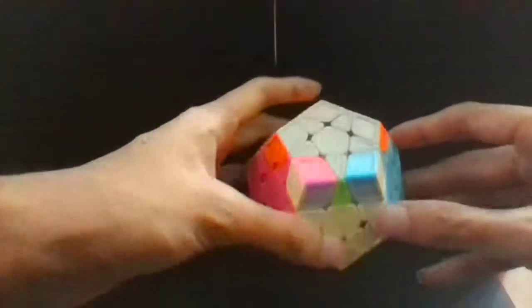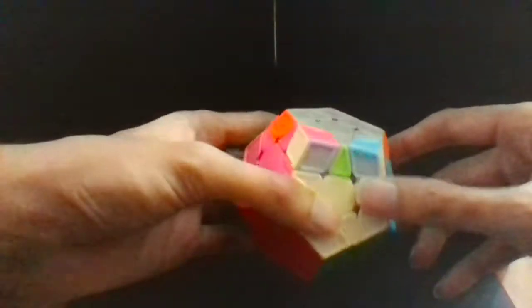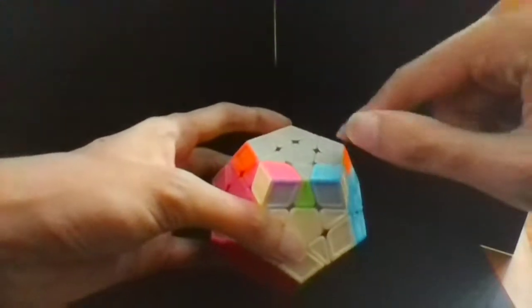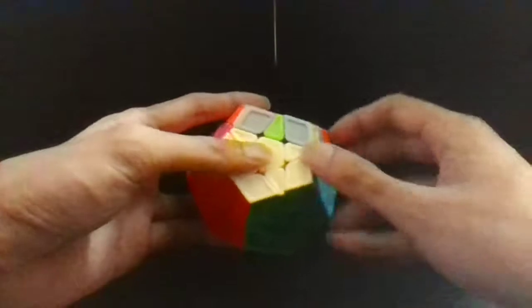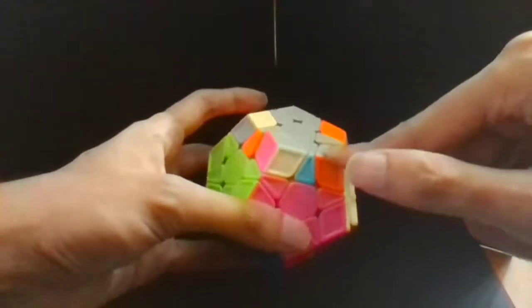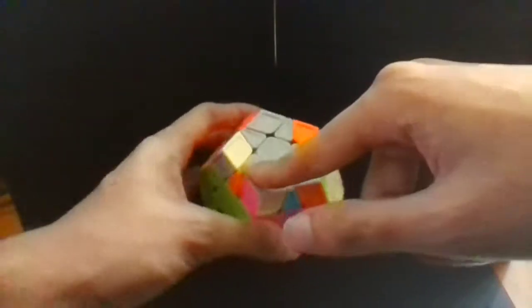So we finish S12 here and the next step is to build an edge corner edge block. For example, we can start by pairing up this corner with this edge and then pairing up this with this edge.